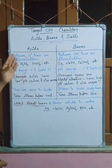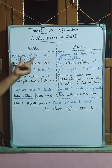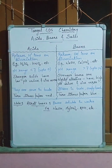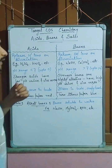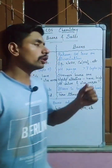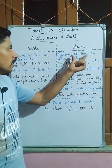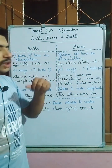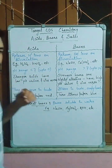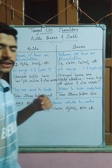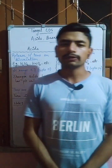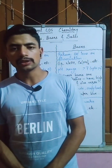If we talk about acids, they release H⁺ ions on dissociation. Some examples of acids are sulfuric acid, nitric acid, acetic acid, and hydrochloric acid.